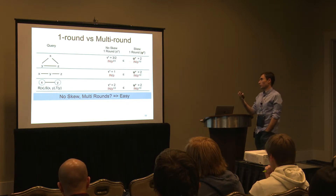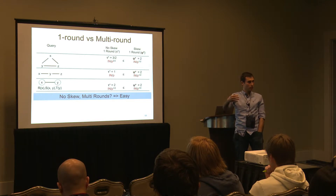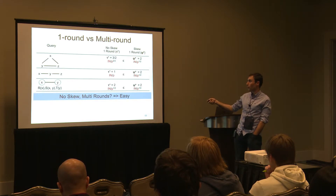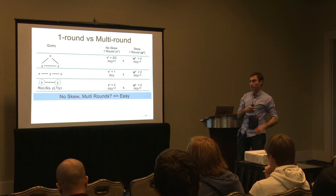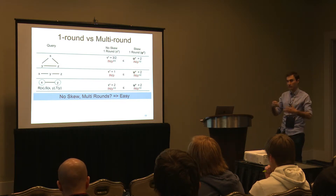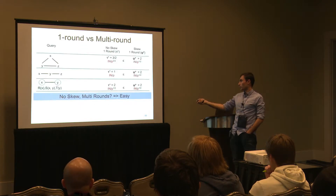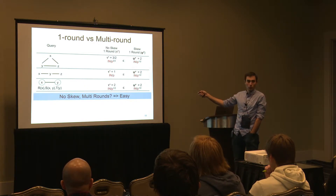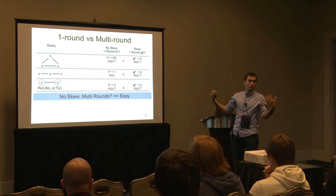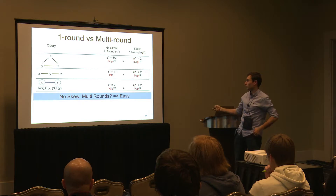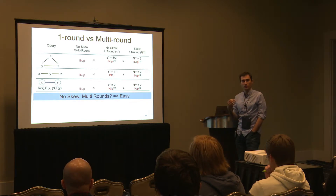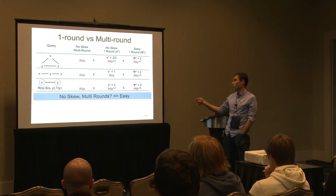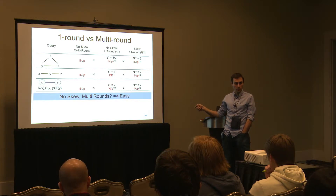In the one-round case, no-skew load complexity is determined by τ* and skew load complexity by ψ*. For multi-rounds with no skew, we should beat the no-skew one-round case. Indeed, for many queries in the extreme no-skew case (degrees all equal to one), iterative binary joins achieve optimal load N/P, because intermediate relation sizes don't grow. The reason this works is that binary joins on no-skew data keep the data size linear.